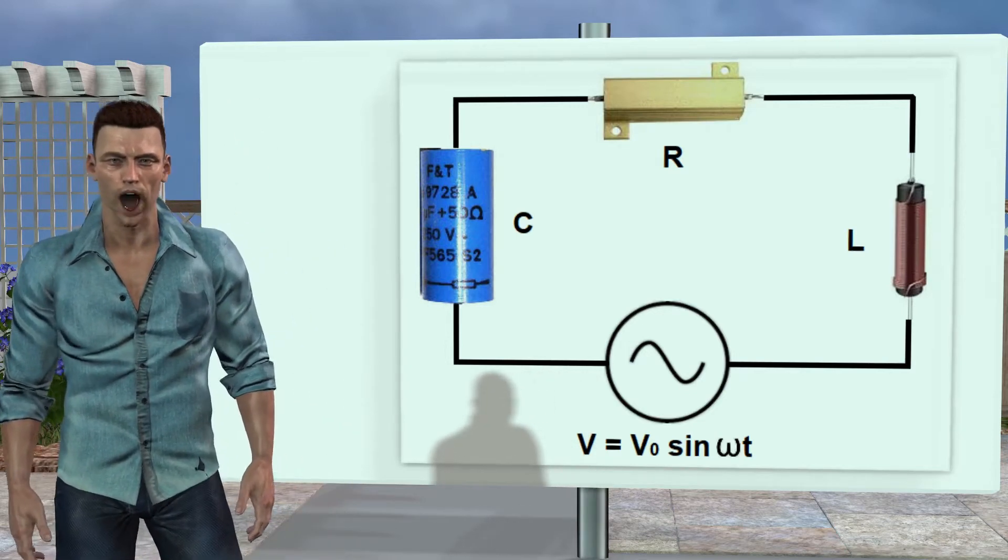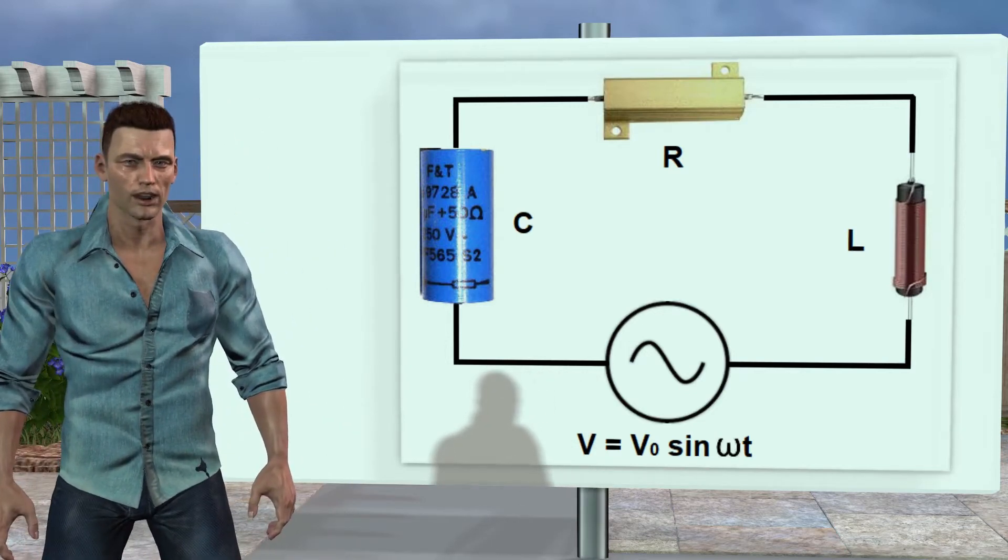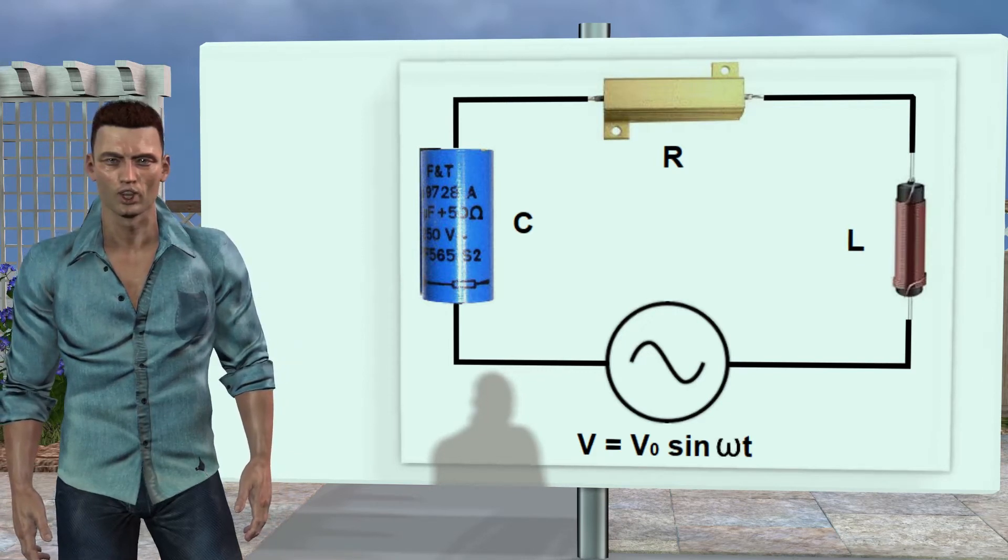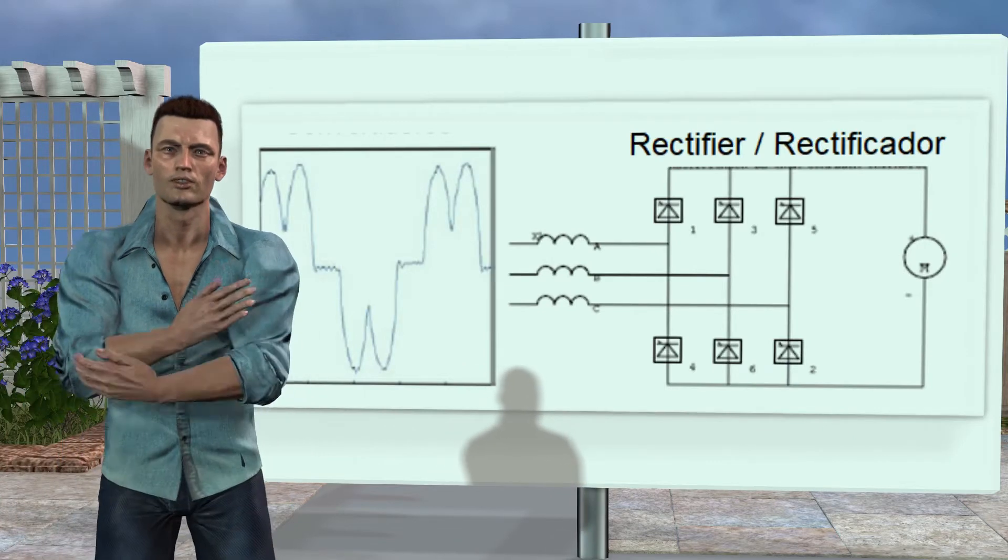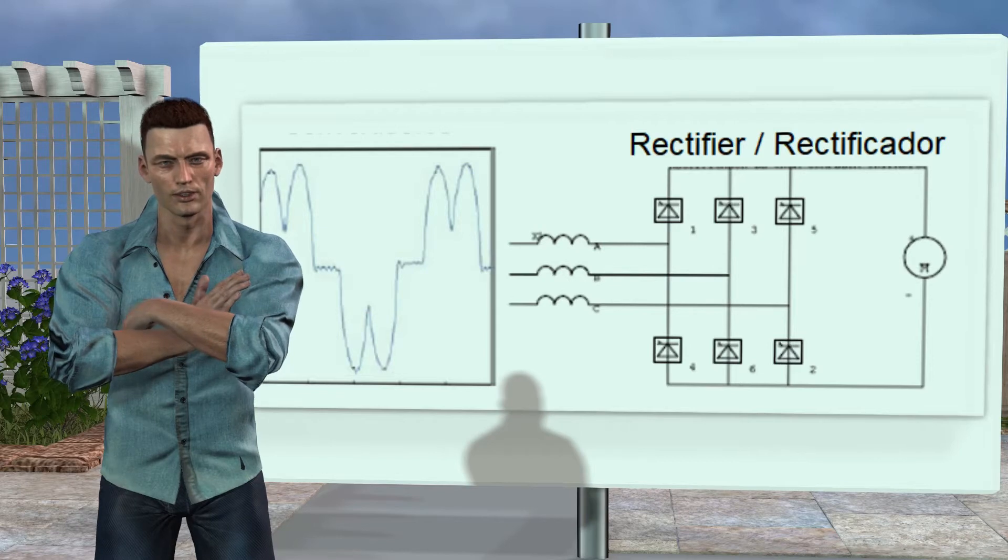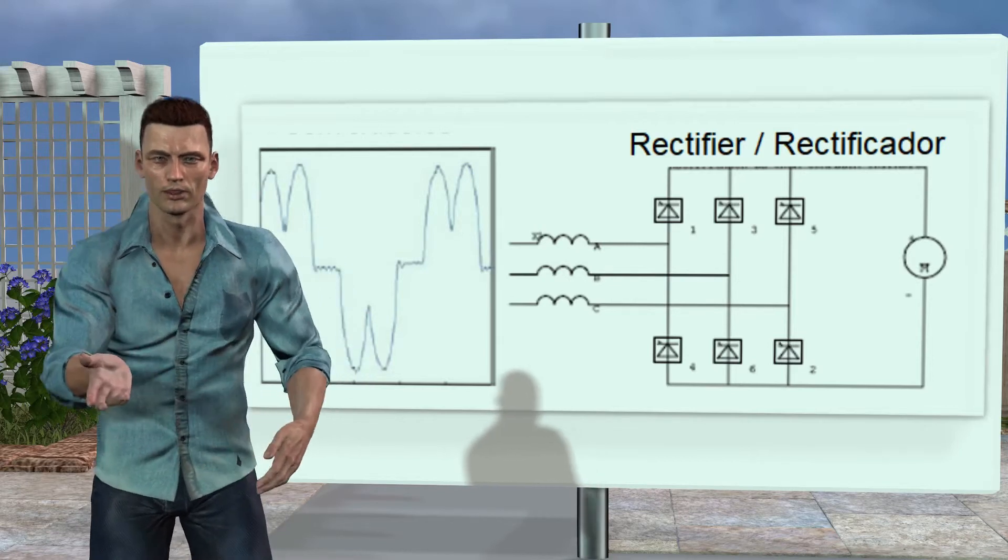For this type of loads, if the voltage is sinusoidal, the currents are also sinusoidal. This is what defines a linear load versus nonlinear loads, in which the current will not be sinusoidal, as it happens with electronic loads like frequency converters, rectifiers, etc.